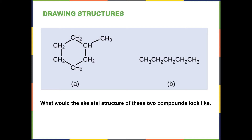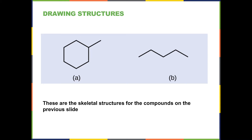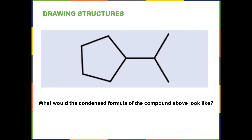Here is what those skeletal structures look like. On the left is the ring structure with one line coming out from the ring. On the right are four individual lines linked together representing the five carbons. Now look at this next skeletal structure and see if you can draw the condensed formula. Feel free to stop the tape, work it out, then start the tape back up for the answer.